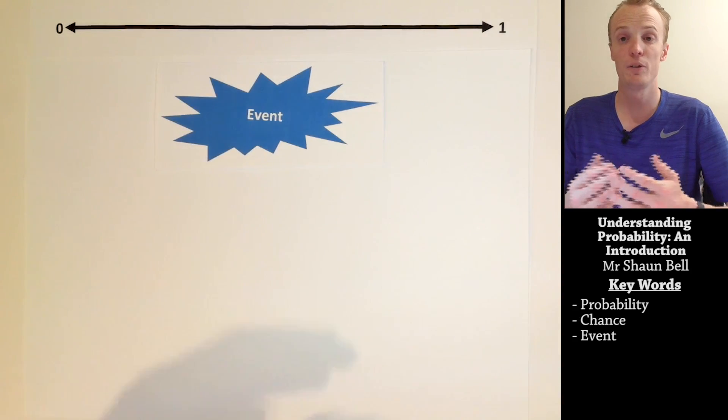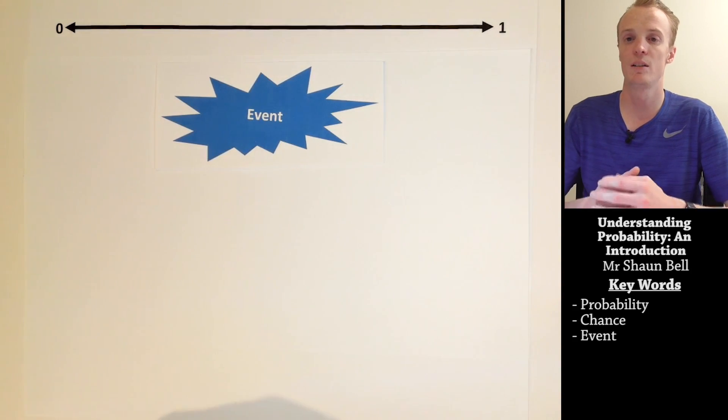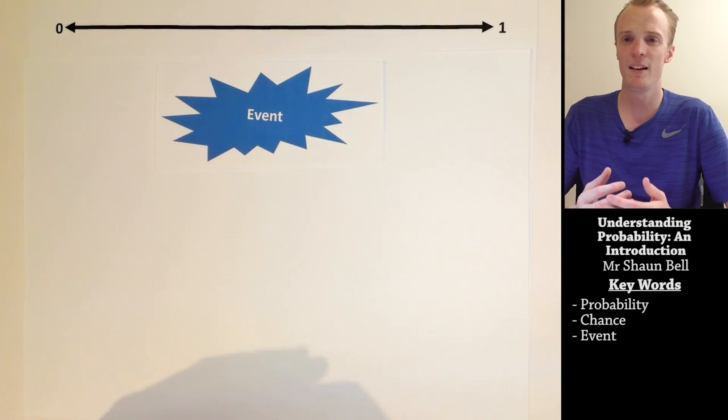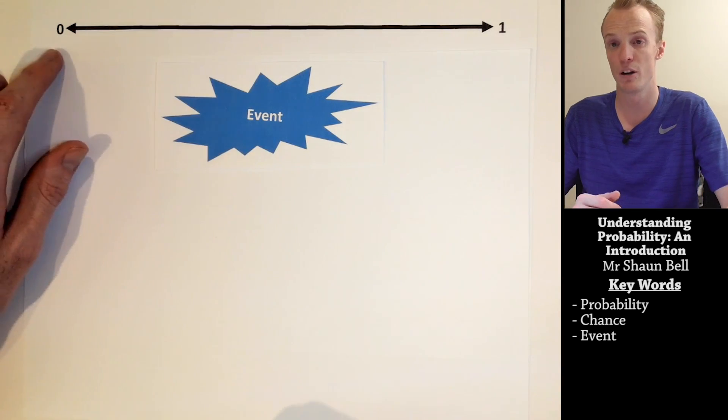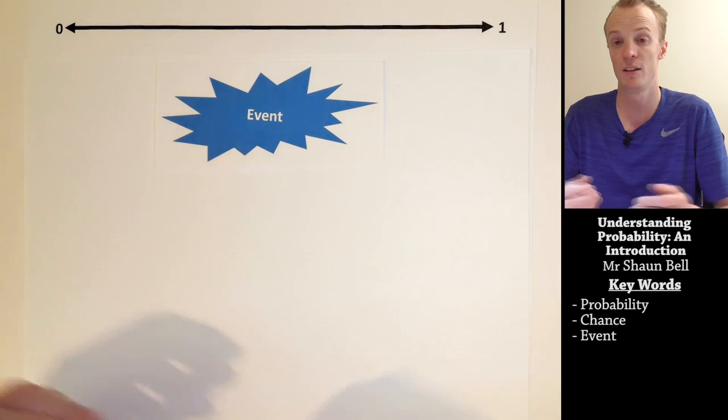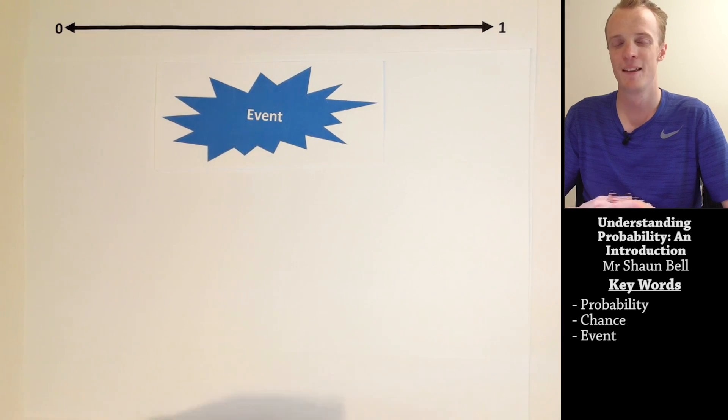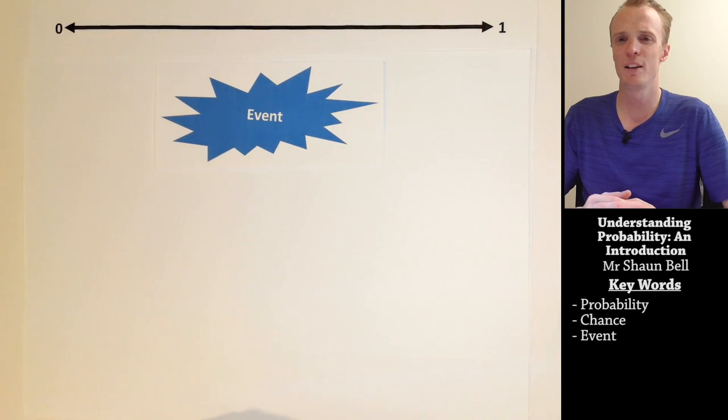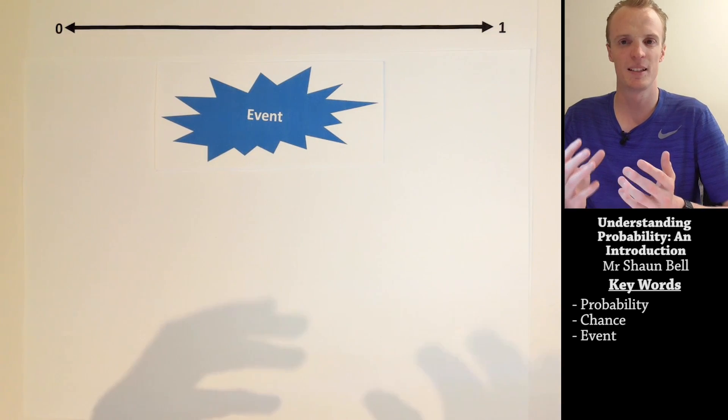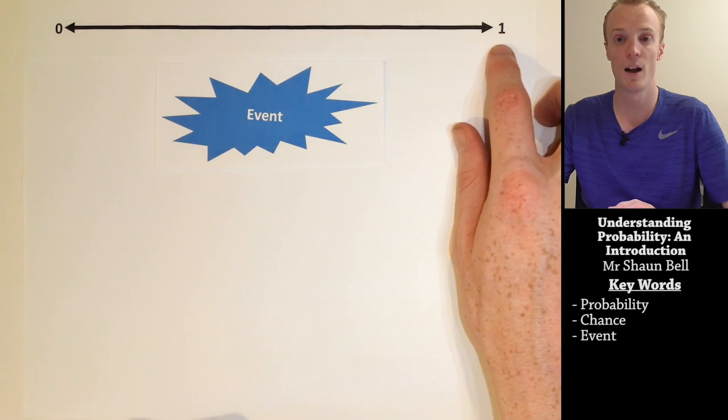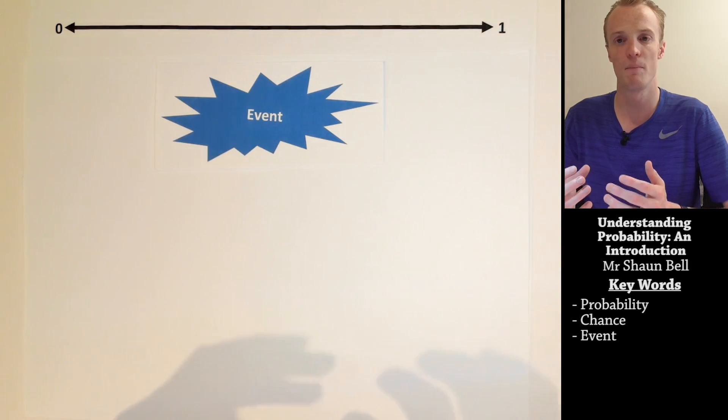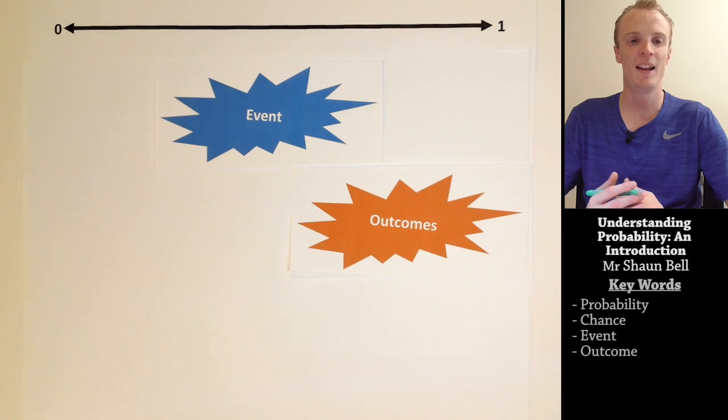For example, if we were to roll a normal six-sided die, the probability of rolling a 7 on that die would be considered 0, because it's impossible. There's only six sides to that die. Whereas, if we were looking at the probability of rolling a number that's less than 7, the probability would be considered to be 1, because the chance of rolling a number less than 7 is absolutely certain.